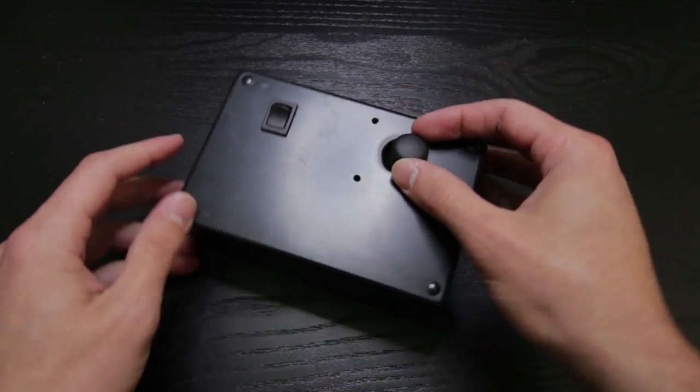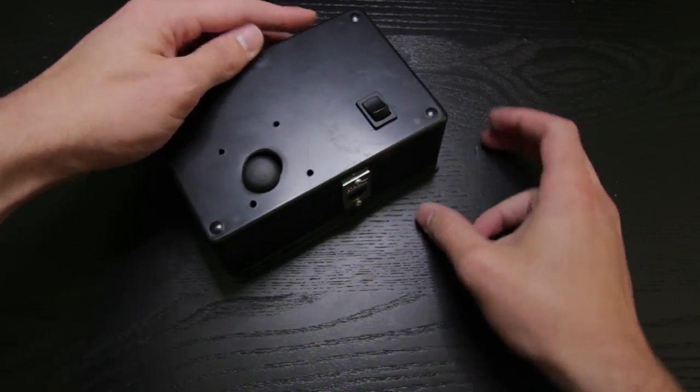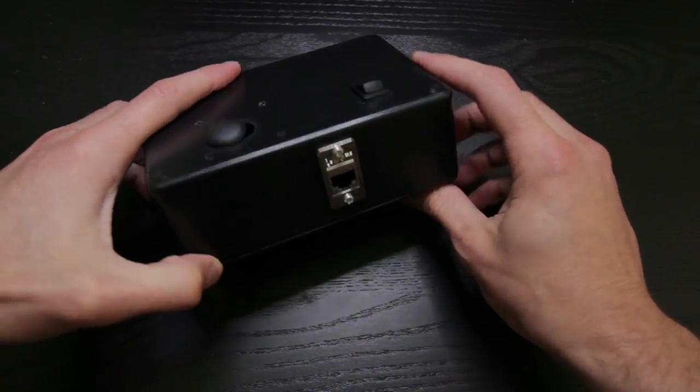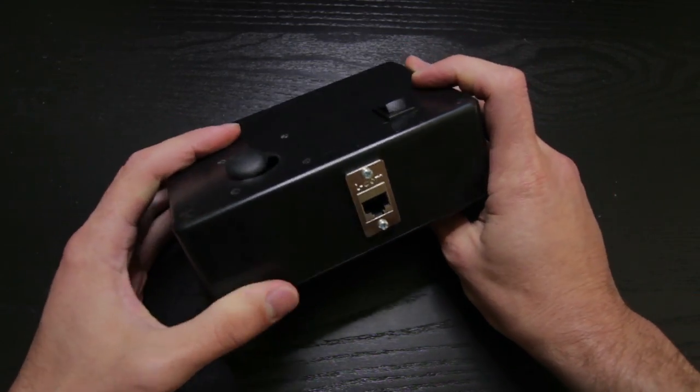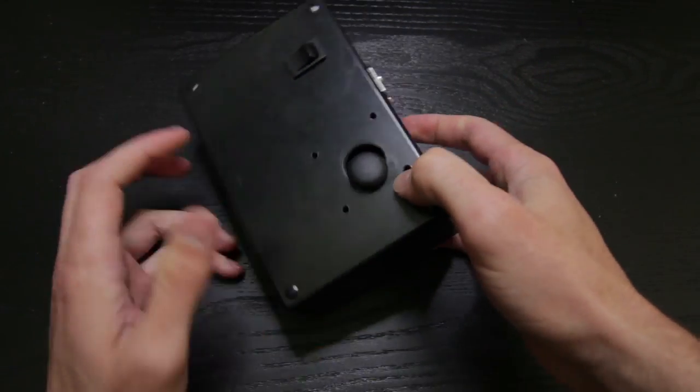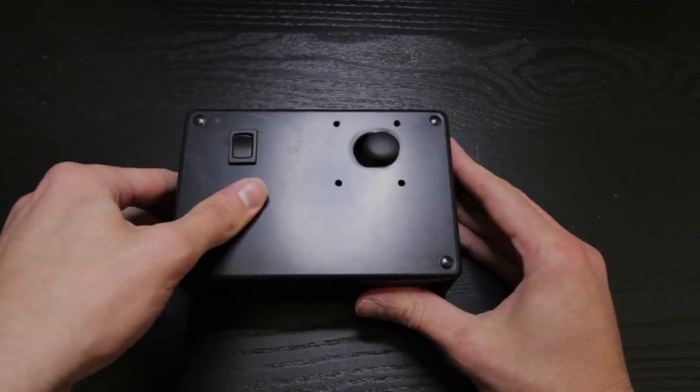Here you can see the power switch and this is the Cat 6 port or an ethernet port that I found which will connect the robot head to my control box.